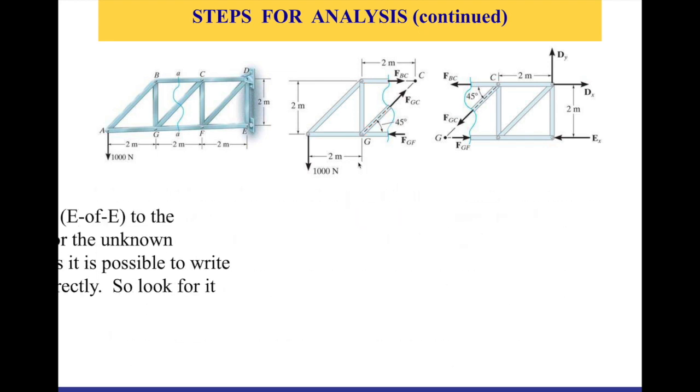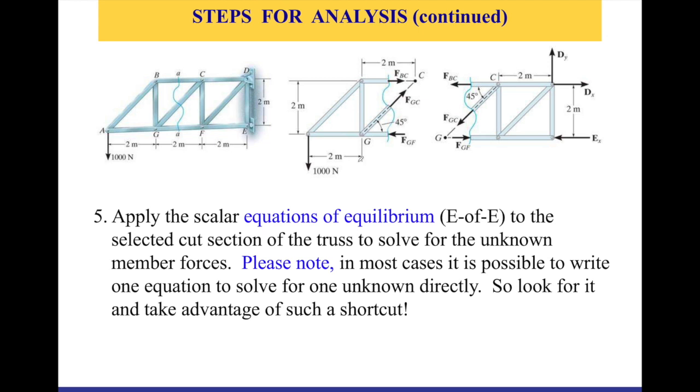After doing that, the final step will be applying the scalar equations of equilibrium to the selected cut. Remember, we can solve for three unknowns using the section method. That's another difference from the joint method. In the joint method, you can solve for only up to two unknowns. In the section method, you can solve for up to three unknowns. So I need to construct three equations of equilibrium. You can use any of the pairs presented in the textbook. So you can find the summation of forces on the x-axis, summation of forces on the y-axis, and summation of moments around an arbitrary point that you can select. They should all equal to zero. And then you can solve for three unknowns.